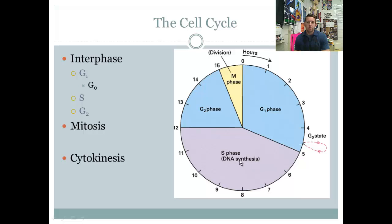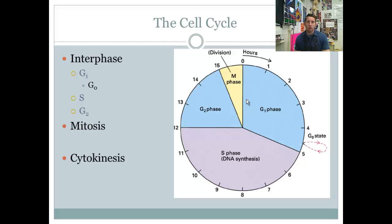In interphase, it's very important that we duplicate everything. Think of it this way: if I were to produce two new me's, what would have to happen first? I would have to duplicate everything in my body — two new lungs, another heart, another stomach, another liver, etc. This is what's happening in interphase.